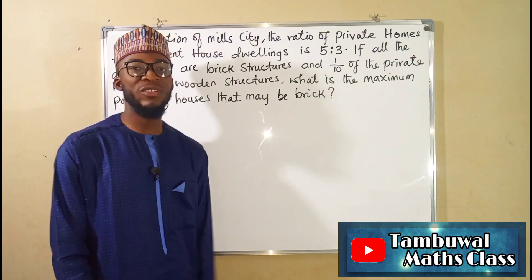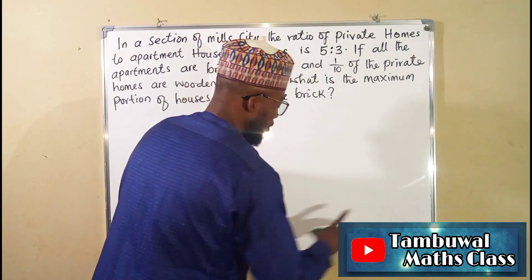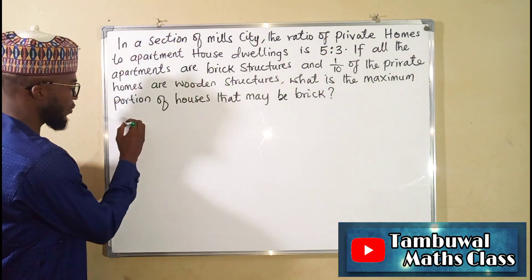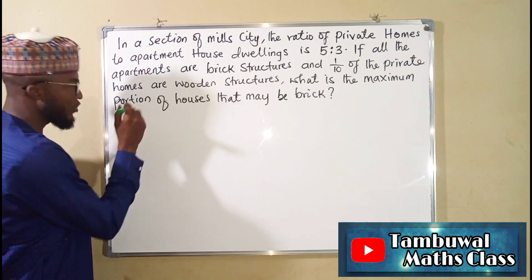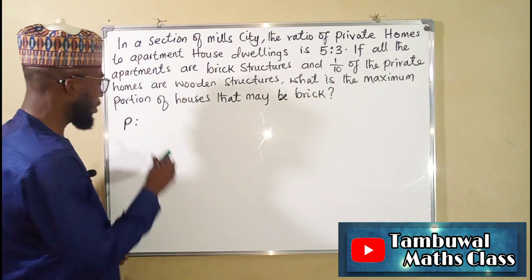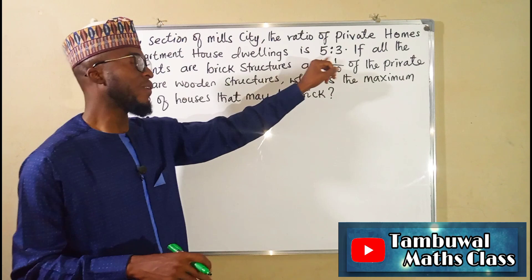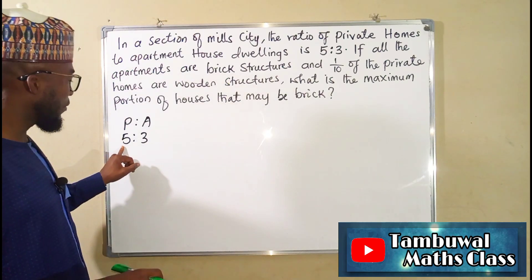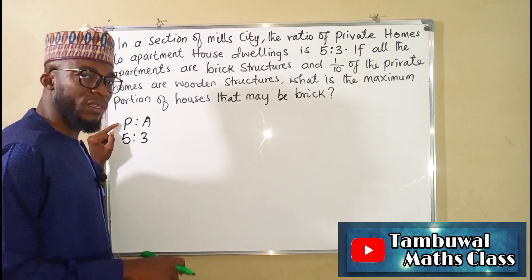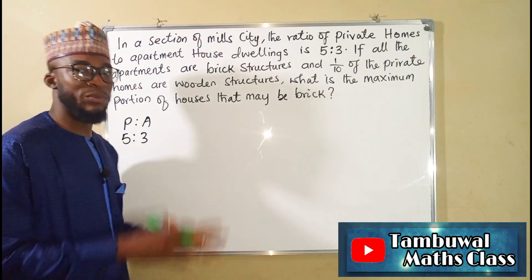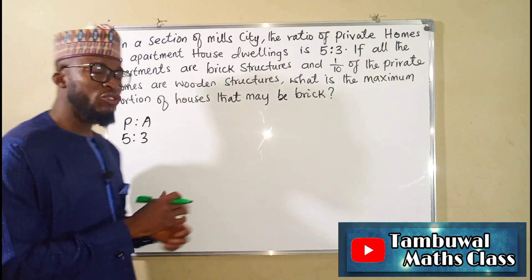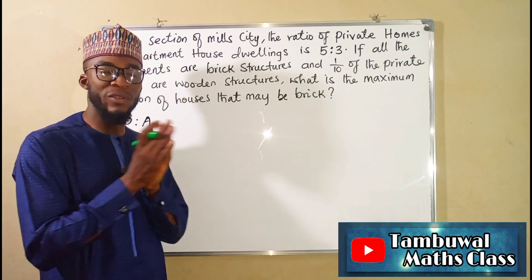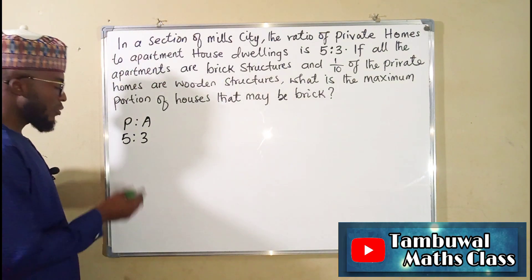Understanding this question is half its answer, so you can pause the video and give it a try. If you're ready, let's do it together. First of all, let us bring out our data. Let the private homes be P and the apartments be A. From the question, their ratio is five to three, which means for every five private homes there are three apartments in that city. We don't know the actual total number of houses, so let X be that number.